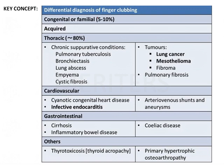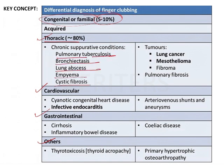For the differential diagnosis of finger clubbing: 5 to 10 percent of cases are congenital or familial, and the rest are acquired. In the acquired category, there are thoracic reasons, cardiovascular reasons, gastrointestinal reasons, and other reasons. Thoracic causes include pulmonary tuberculosis, bronchiectasis, lung abscess, empyema, cystic fibrosis, and tumors such as lung cancer, mesothelioma, fibroma, and pulmonary fibrosis.